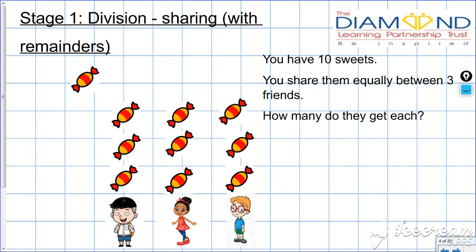And can we give four? No, we can't give four equally unless we chop the sweet up in bits. So therefore, this is what we call our remainder. That's going to be our remainder.